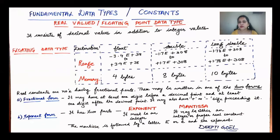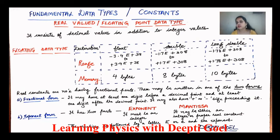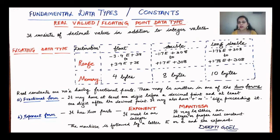For long double, the range is the same as double. Memory allocated to float is 4 bytes; for double it is 8 bytes — double means memory is doubled; and for long double, storage is increased again to 10 bytes. Real constants are numbers having fractional parts. The real value is represented in two forms: the fractional form and the exponent form.